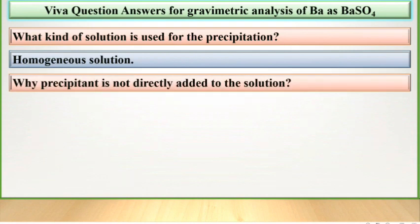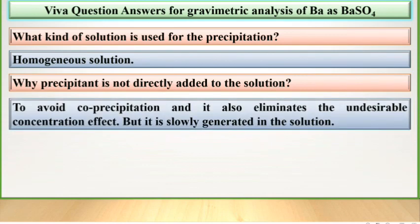Why precipitant is not directly added to the solution? To avoid co-precipitation and it also eliminates the undesirable concentration effect. But it is slowly generated in the solution.